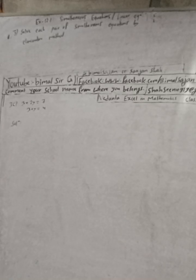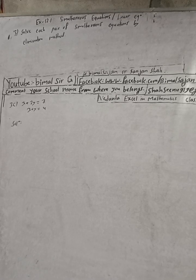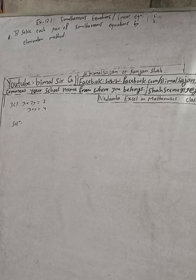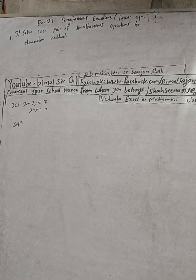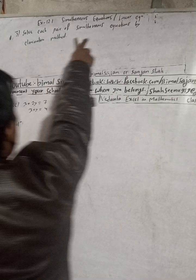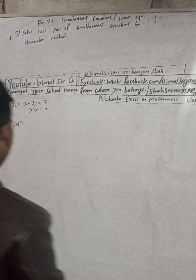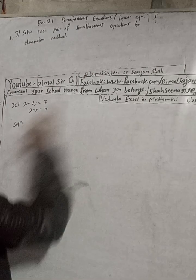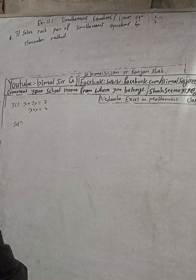Hi, Class 9 and 10 students, welcome back to Vimal Sarji YouTube channel. This is question number 3C, exercise 12.1, simultaneous equations — Vedant Excel in Mathematics Class 9. The question asks us to solve a pair of simultaneous equations by the elimination method. Elimination method means we eliminate x or y by adding or subtracting.